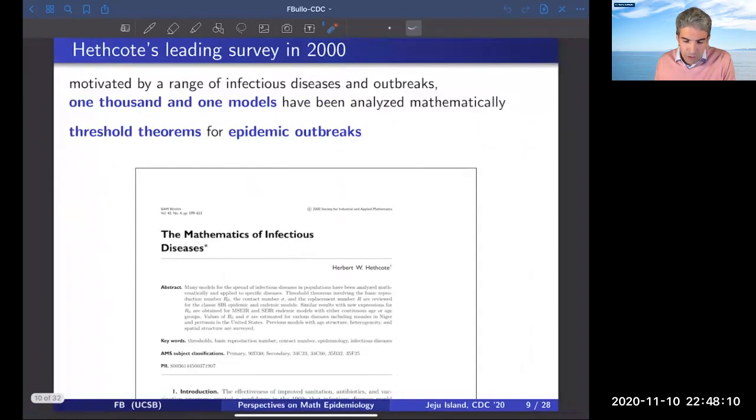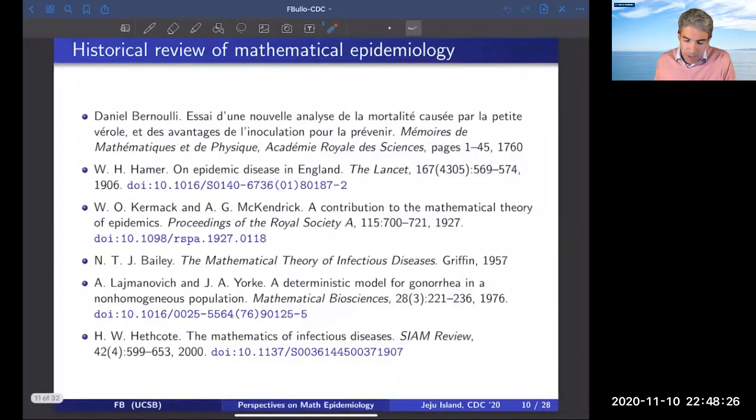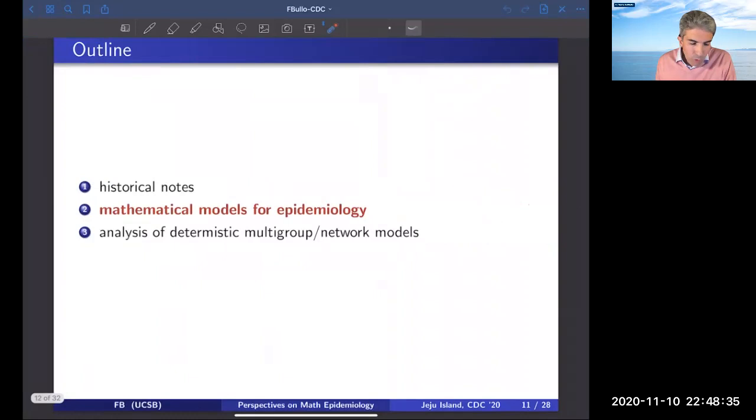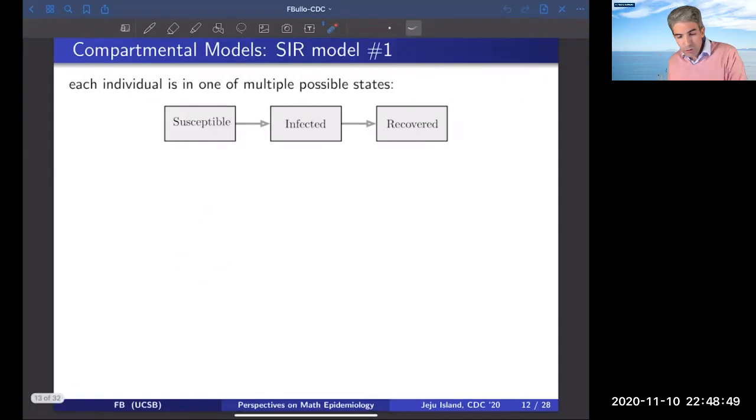This is the first reference that identifies the spectral radius of the contact graph as being a very important quantity to consider in the definition of the reproduction number. There is a wonderful survey in the year 2000 by Herbert Hethcote, which I do recommend. It points out that already at that point in time, a very large number of models had already been proposed and analyzed. So this is a rich literature.